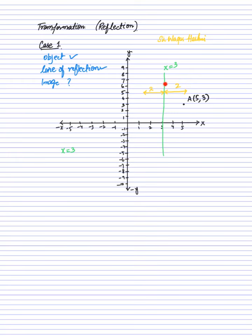The line of reflection is at x equals 3. Moving 2 steps to the left means subtracting 2, so 3 minus 2 equals 1. The y-coordinate remains the same. So the final answer is 1 comma 3. The reflected point A' after reflection across the line x equals 3 is at coordinates 1 comma 3.